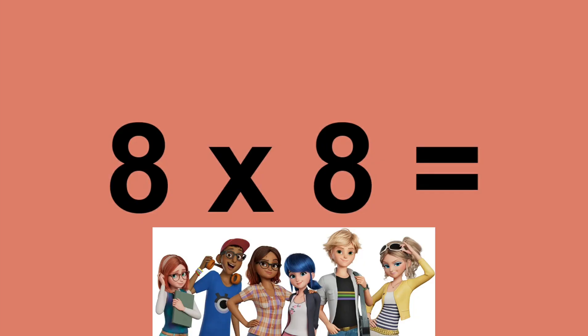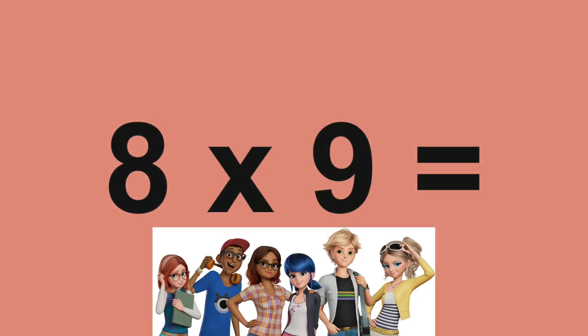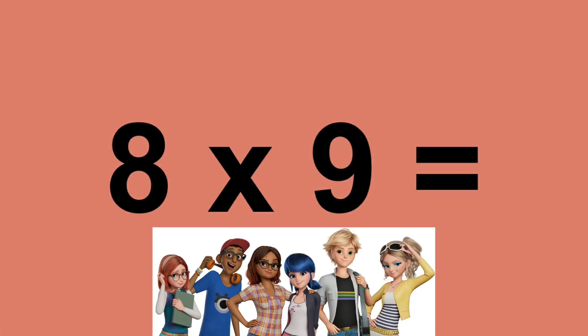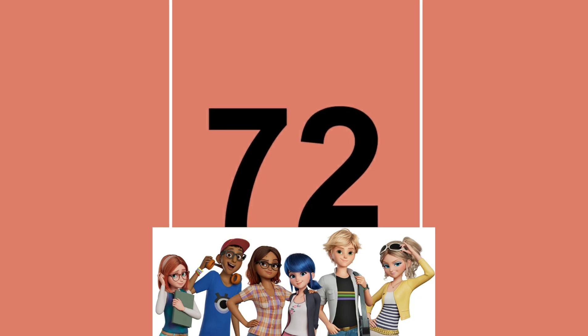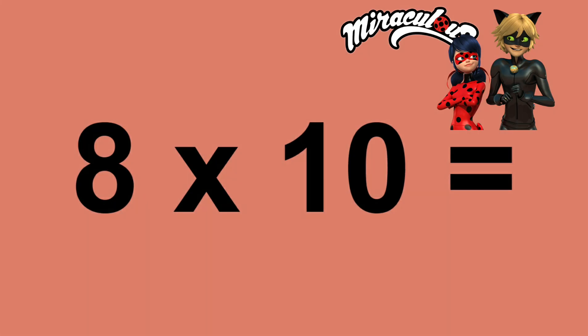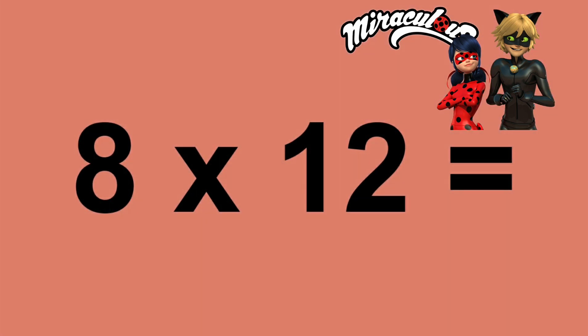Eight times eight equals sixty-four. Eight times nine equals seventy-two. Eight times ten equals eighty. Eight times eleven equals eighty-eight. Eight times twelve equals ninety-six.